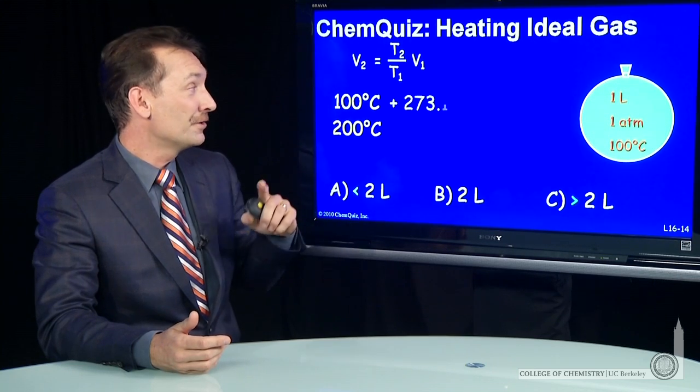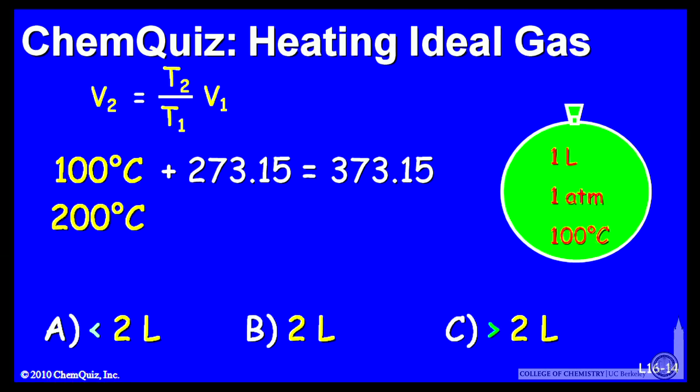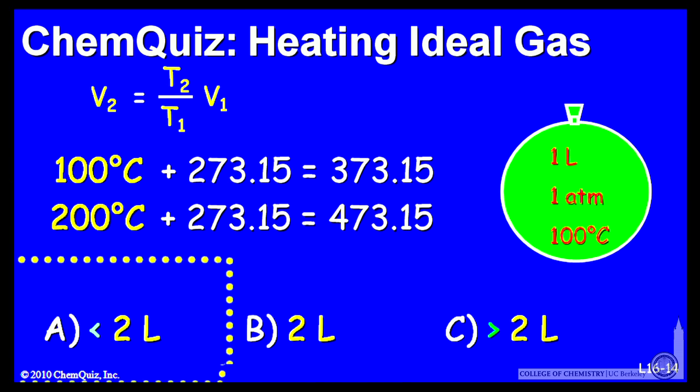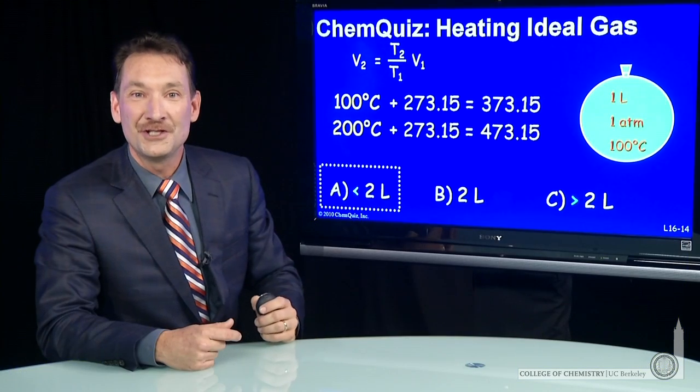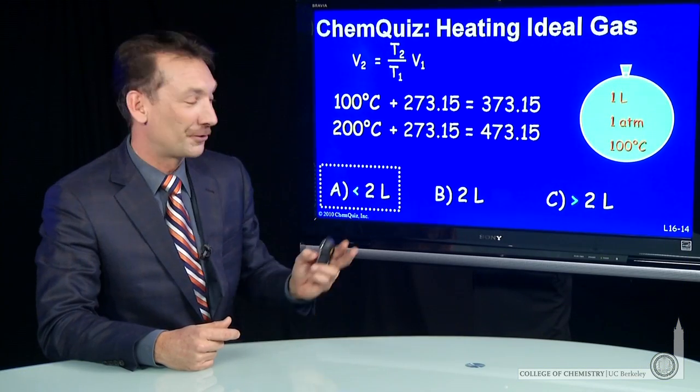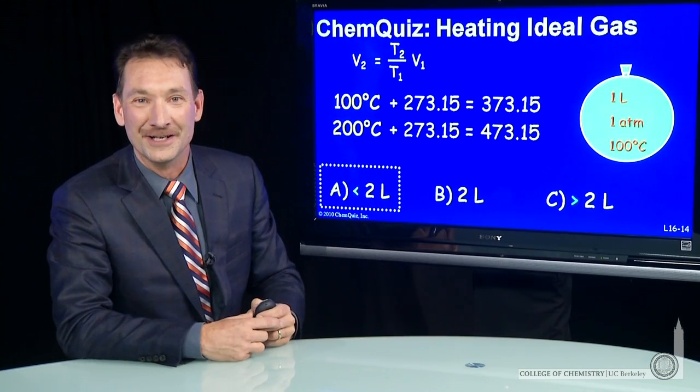So 100 degrees C to 200 degrees C is 373 Kelvin to 473 Kelvin. That ratio is less than a factor of 2, so we'll have less than a factor of 2 change in the volume. The correct answer here: less than 2 liters.